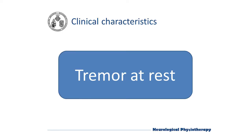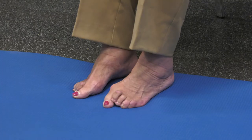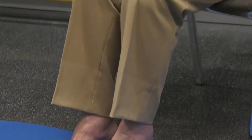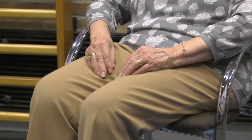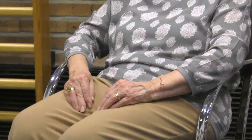Tremor is the most known sign of Parkinson's disease but it is not essential for diagnosis. Tremor is usually between four and six hertz and usually stops with voluntary movement. Now we can see the patient keeping her hands on her legs and her bare feet on the floor. In this case we can only observe a tremor in the right hand.